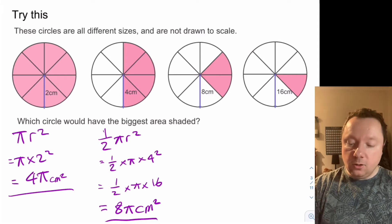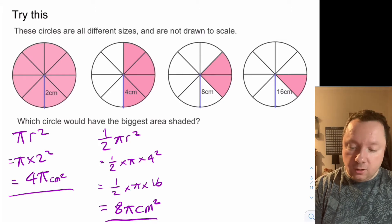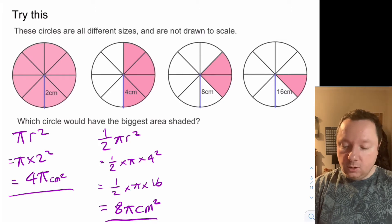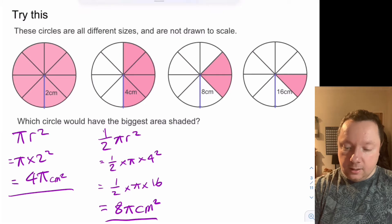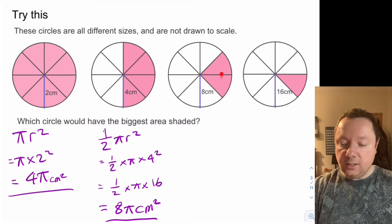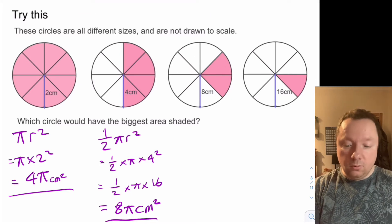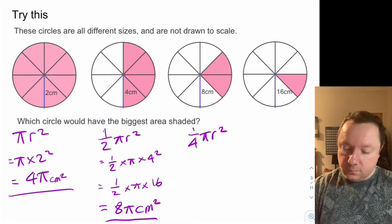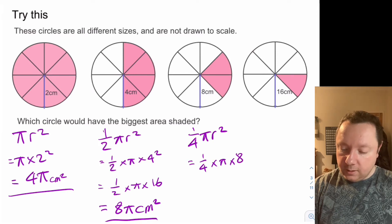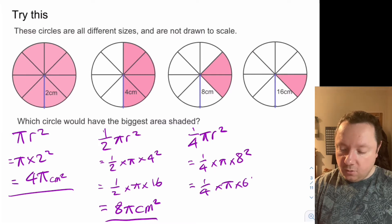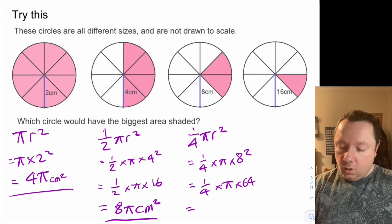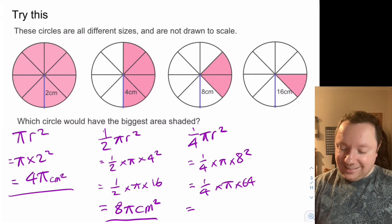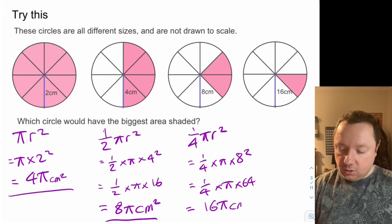The second one is not the middle one. Let's look at the third one — a little bit tricky. If you count the segments there are eight, so two of those are shaded, which is a quarter of the circle. So I'm going to do a quarter pi r squared, which is a quarter times pi times eight squared — a quarter times pi times 64. A quarter of 64 is 16, so that's 16 pi centimetres squared.